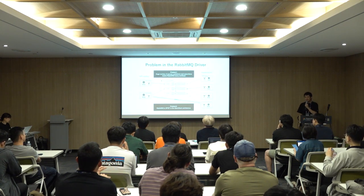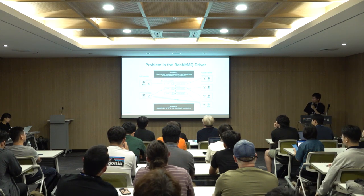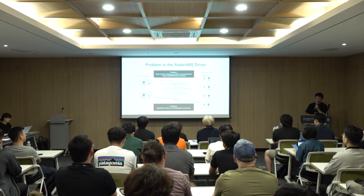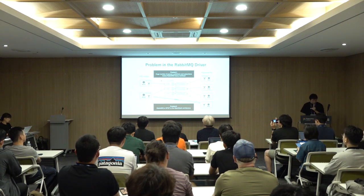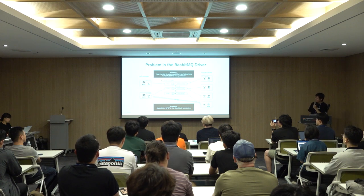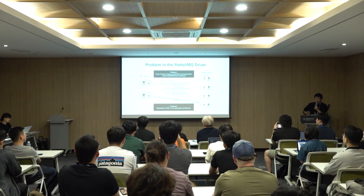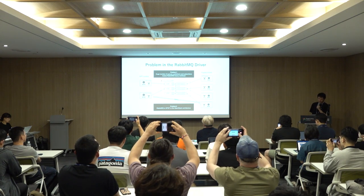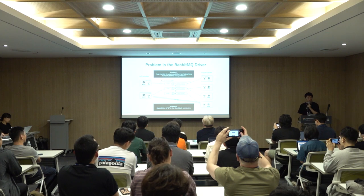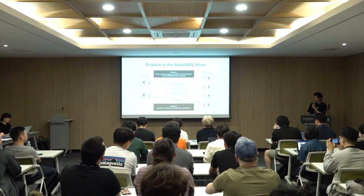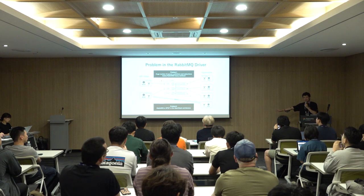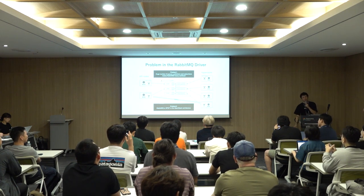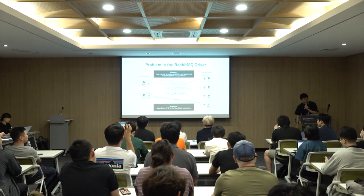We found two big problems in the RabbitMQ driver. Problem one: a huge number of queues, publishers, and subscribers makes RabbitMQ very heavy workloads. Problem two: RabbitMQ is a SPOF — single point of failure — in the OpenStack architecture. Once we stop RabbitMQ, we cannot create a VM, cannot create a virtual router, cannot issue a token in Keystone — something like that.